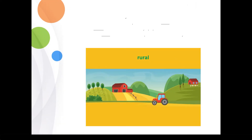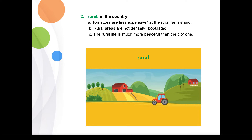'Rural' means in the country. Example one: tomatoes are less expensive at the rural farm stand. Example two: rural areas are not densely populated. Example three: the rural life is much more peaceful than the city one.